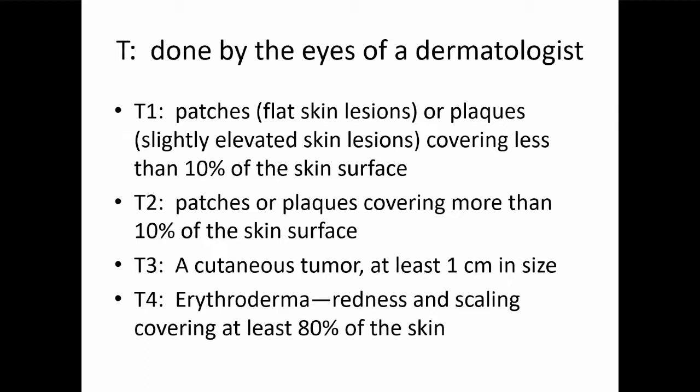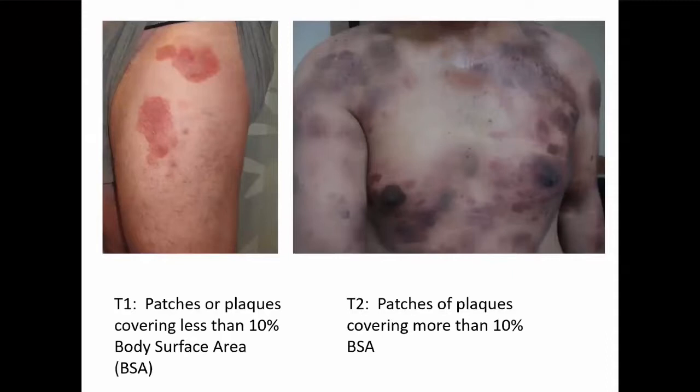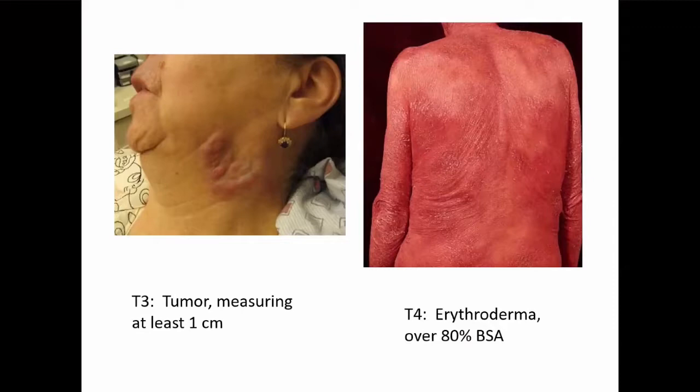For example, if you had two spots you would be T1. If you're covered in patches or plaques that's going to be T2. Tumors make you T3, and erythroderma is T4. Now on to N — looking at the lymph nodes. We'll feel for lymph nodes, and depending on how much skin involvement you have, you may or may not get a CAT scan. Not everyone necessarily needs a CAT scan if they only have a few patches or plaques. We'll also feel for the liver and spleen, and can do CAT scans or PET scans.